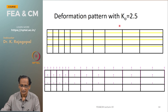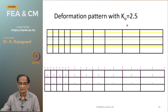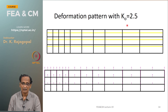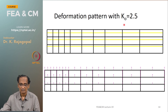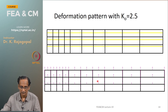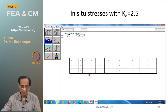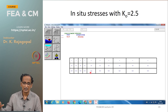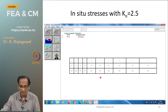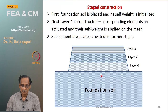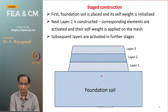With a K0 of 2.5 - a very high initial pressure state - the entire soil heaves up. The yellow line is the original mesh and the black line is the deformed mesh. The stress vectors show the horizontal component very long compared to the vertical, confirming that lateral pressure is dominant. This staged construction approach is very important in geotechnical engineering.